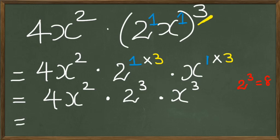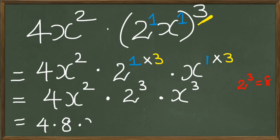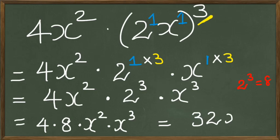Now 2 to the power of 3 equals 8, so the answer is 4 times 8 times x squared times x cubed. That gives us 32x to the power of 5. As you can see, 4 times 8 is where our 32 comes from, and x squared times x cubed — when you multiply them, the powers get added — gives x to the power of 5.